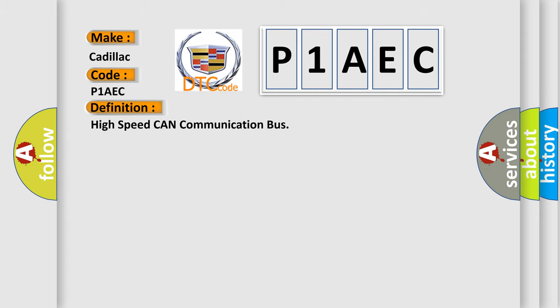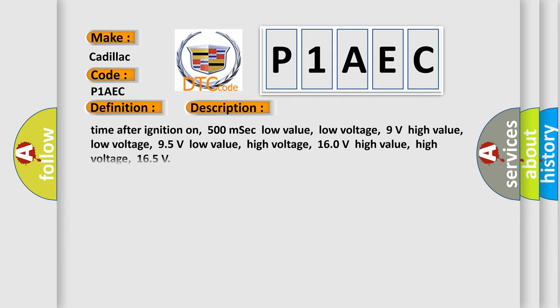The basic definition is High-speed CAN communication bus. And now this is a short description of this DTC code. Time after ignition on: 500 MSEC. Low value low voltage: 9 volts. High value low voltage: 95 volts.